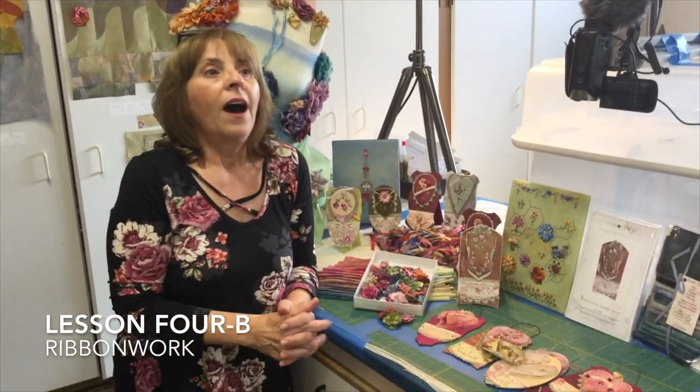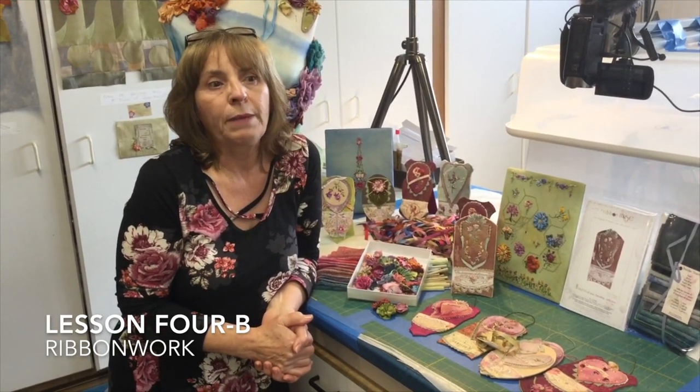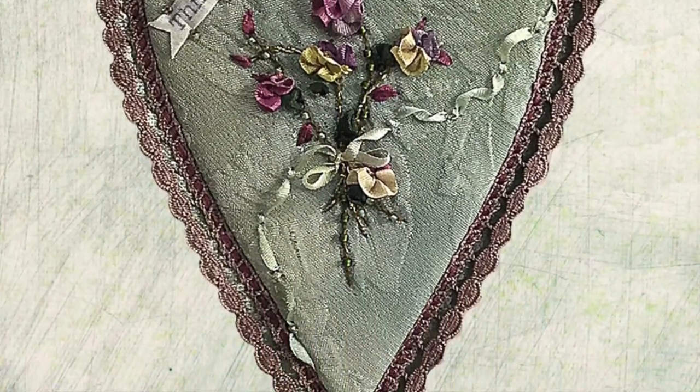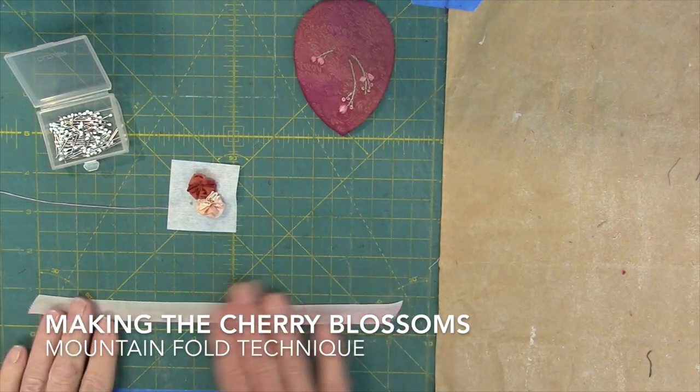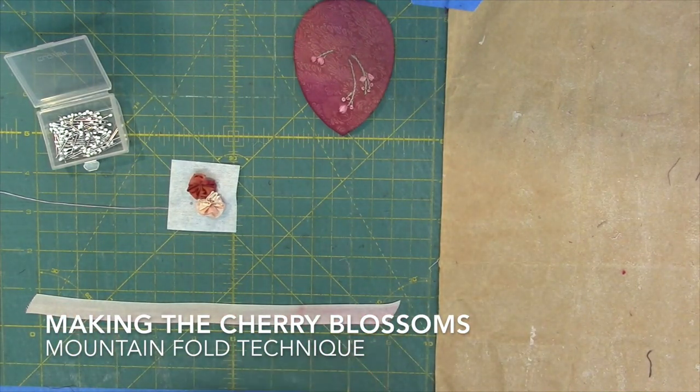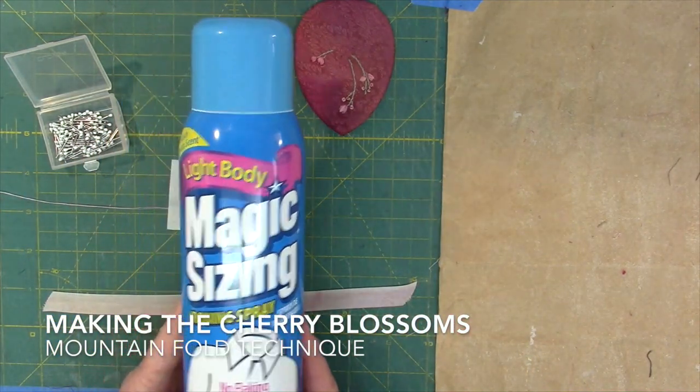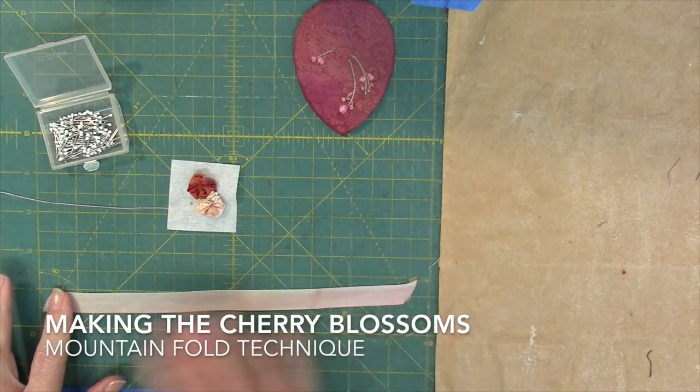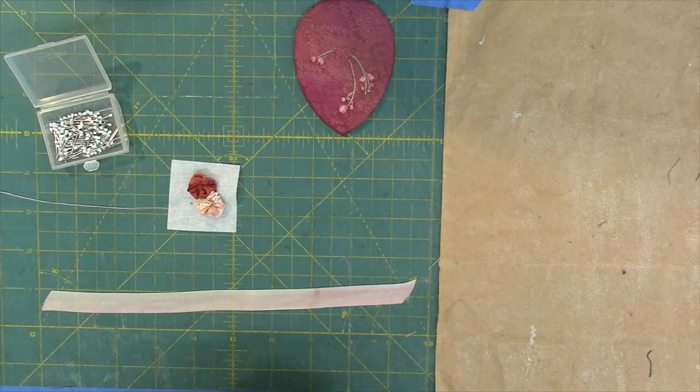All right, it's time for lesson 4b ribbon. We're going to make the cherry blossoms using a technique I call mountain folds. Start by spraying a light layer of spray starch onto the ribbon and press the ribbon dry. This gives the ribbon more body and is easier to use.